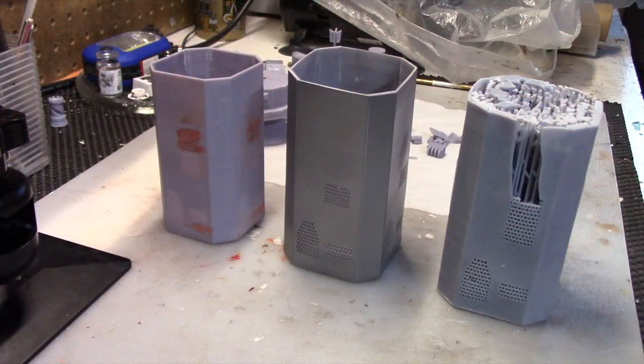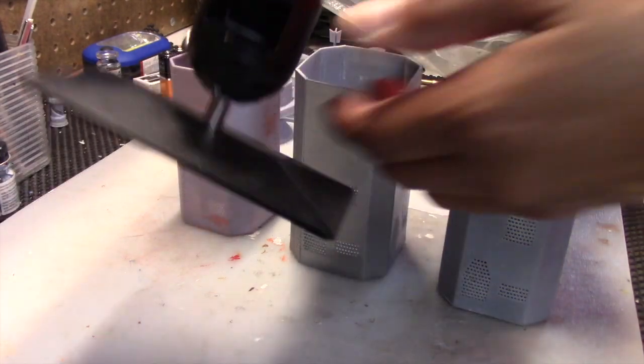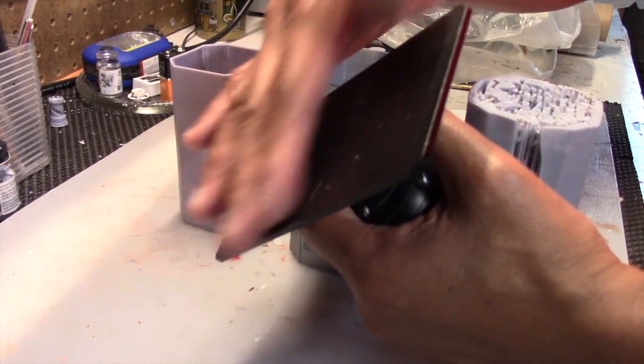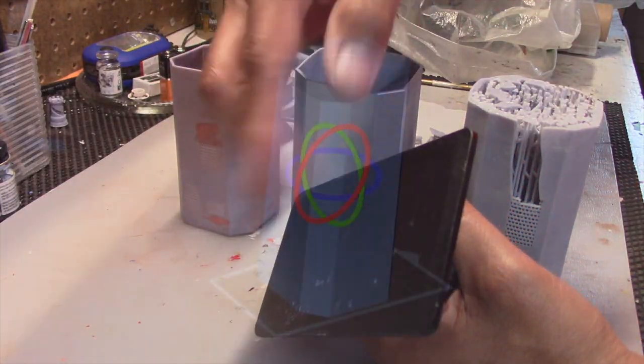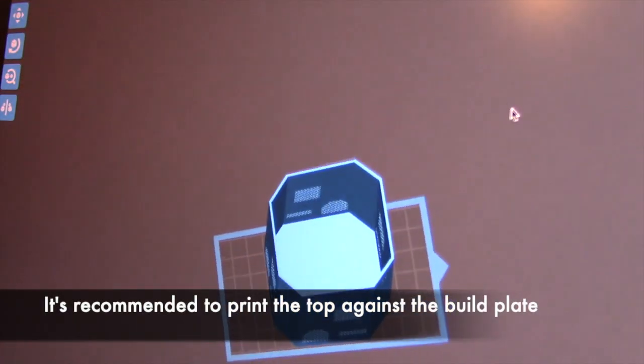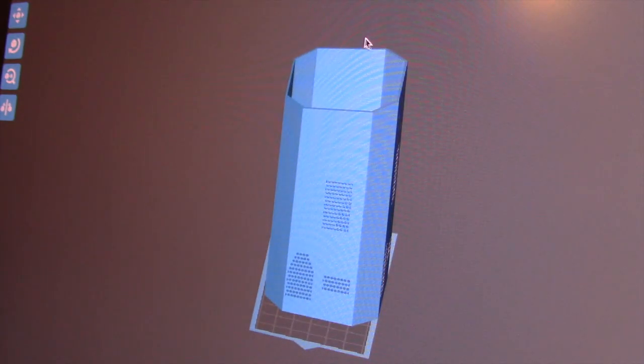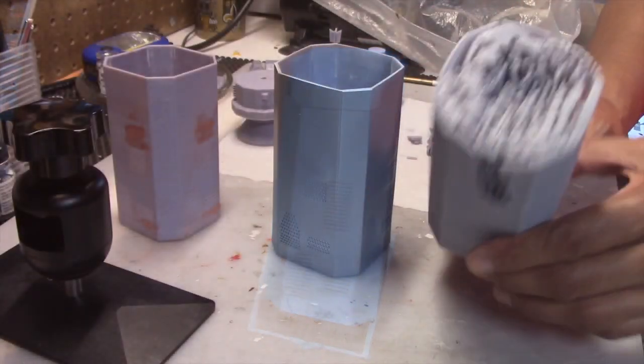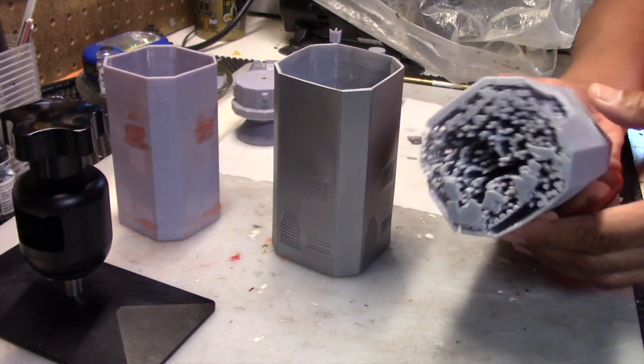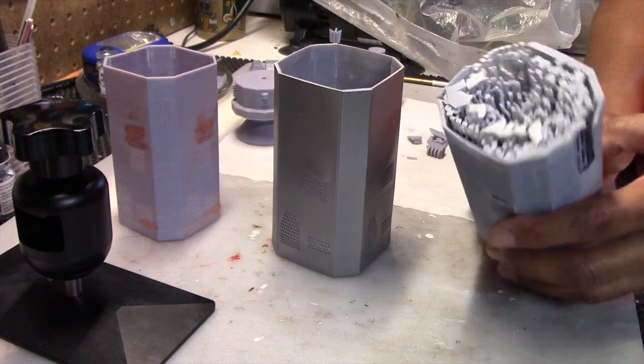So let's talk about the print. What you see here are three of five attempts to print the main body. Let me walk you through what happened. First of all, the designer of the file recommended that the model be placed with the top or closed side against the build plate. Being new at this, I was uncertain as to whether or not supports were needed. I figured it wouldn't hurt having them on the inside, but this is what ended up happening. I ended up placing way too many supports, and when they cured, they expanded and cracked the exterior. So it was on to the next try.